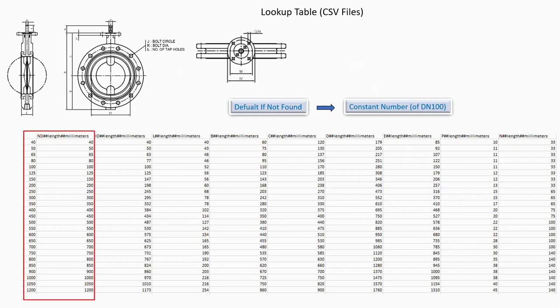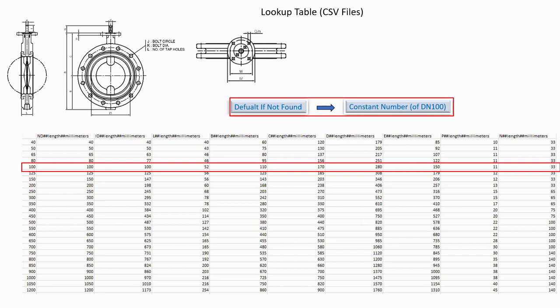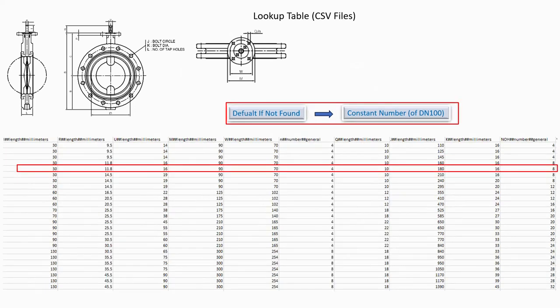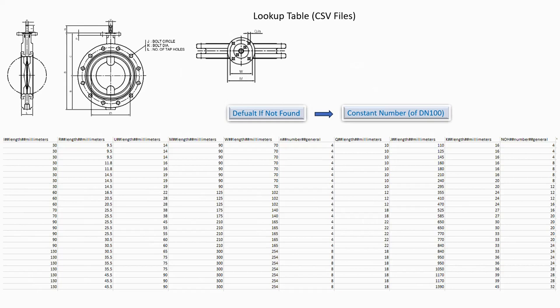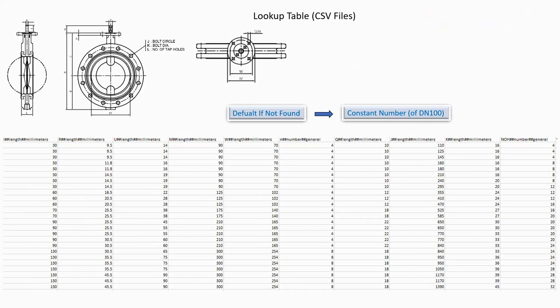There are pipe DN40 to DN1200. I will use this formula for default when not found. I will refer those dimensions in the picture to create the parameters. Before going to Revit, I would like to request you to subscribe to the channel and click the notification bell for the next video. Okay, let's go to Revit.